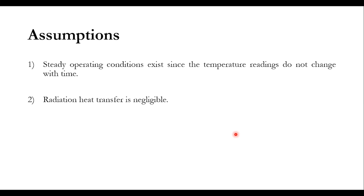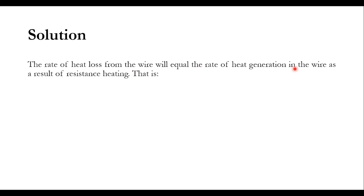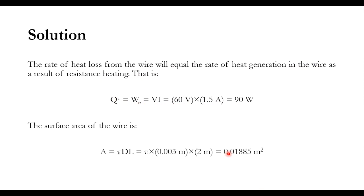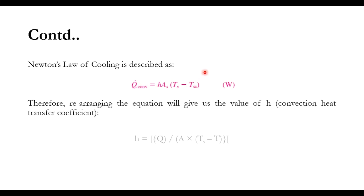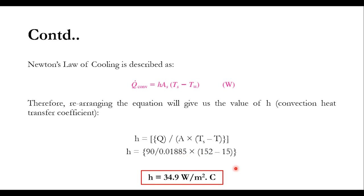Assumptions: steady state and negligible radiation. The rate of heat loss equals the rate of heat generation: Q = V·I = 60 × 1.5 = 90 W. The surface area of the wire: A = π·d·L = π × 0.003 m × 2 m = 0.01885 m². Applying Newton's Law of Cooling and rearranging: h = Q / [A·(Ts − T∞)] = 90 / [0.01885 × (152 − 15)] = 34.9 W/m²·°C.